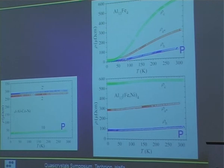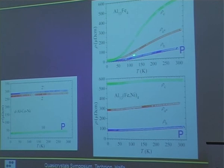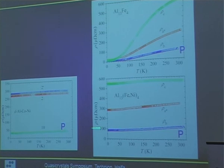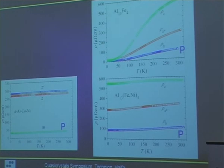Comparing pure Al13Fe4, its disordered version, and decagonal Al-Co-Ni: the disordered compound has almost temperature-independent resistivity because phonons are suppressed by disorder. The pure compound shows strongly temperature-dependent resistivity where phonons propagate and produce a positive temperature coefficient. The decagonal quasicrystal also shows almost temperature-independent resistivity, indicating phonons are very much reduced. Long-wavelength phonons defining the decagonal structure as an elastic continuum are still present, but the phonon density of states should be low in quasicrystals.